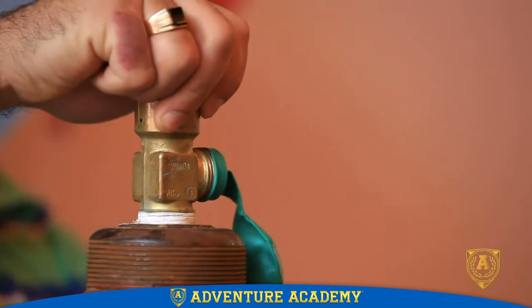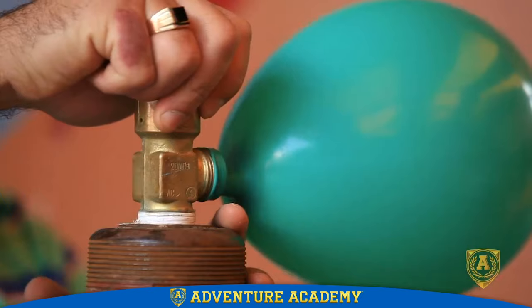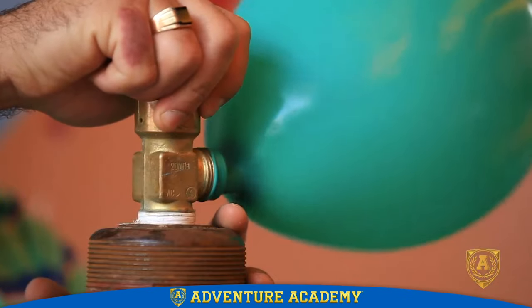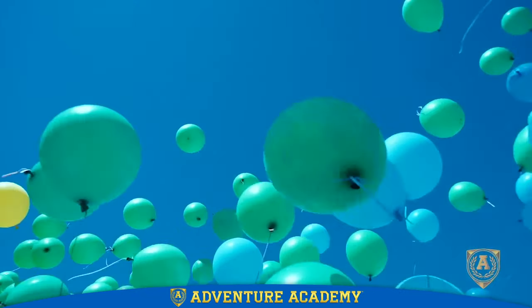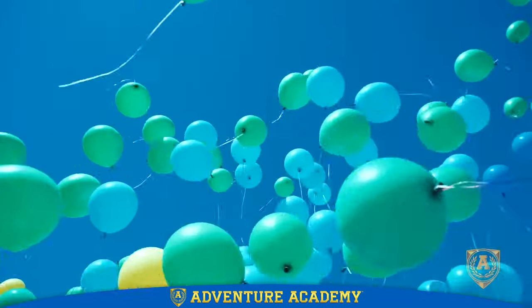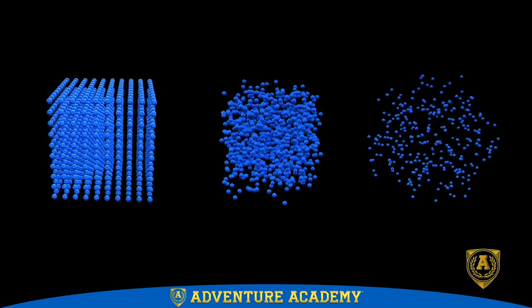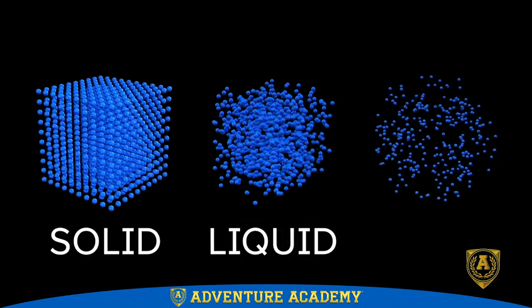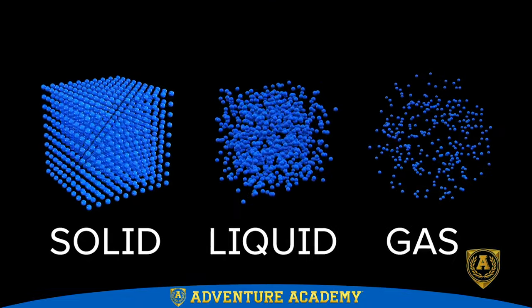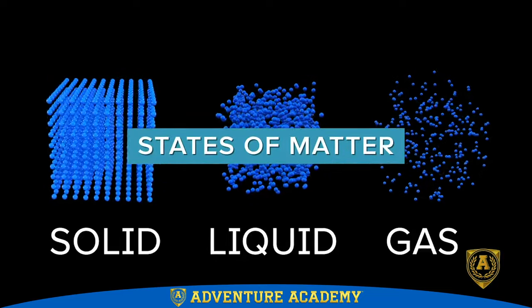Matter can also spread out to fill whatever space it's in, like air does. When matter acts like this, it's called a gas. These three forms of matter — solid, liquid, and gas — are called states of matter.